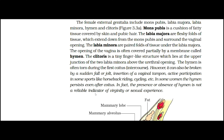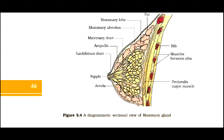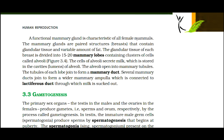A functional mammary gland is characteristic of all female mammals. The mammary glands are paired structures, which are breasts, that contain glandular tissue and variable amounts of fat. The glandular tissue of each breast is divided into 15–20 mammary lobes containing clusters of cells called alveoli, as given in figure 3.4. The cells of alveoli secrete milk which is stored in the cavities, or lumen, of alveoli. The alveoli open into mammary tubules. The tubules of each lobe join to form a mammary duct. Several mammary ducts join to form a wider mammary ampulla, which is connected to the lactiferous duct through which milk is sucked out.